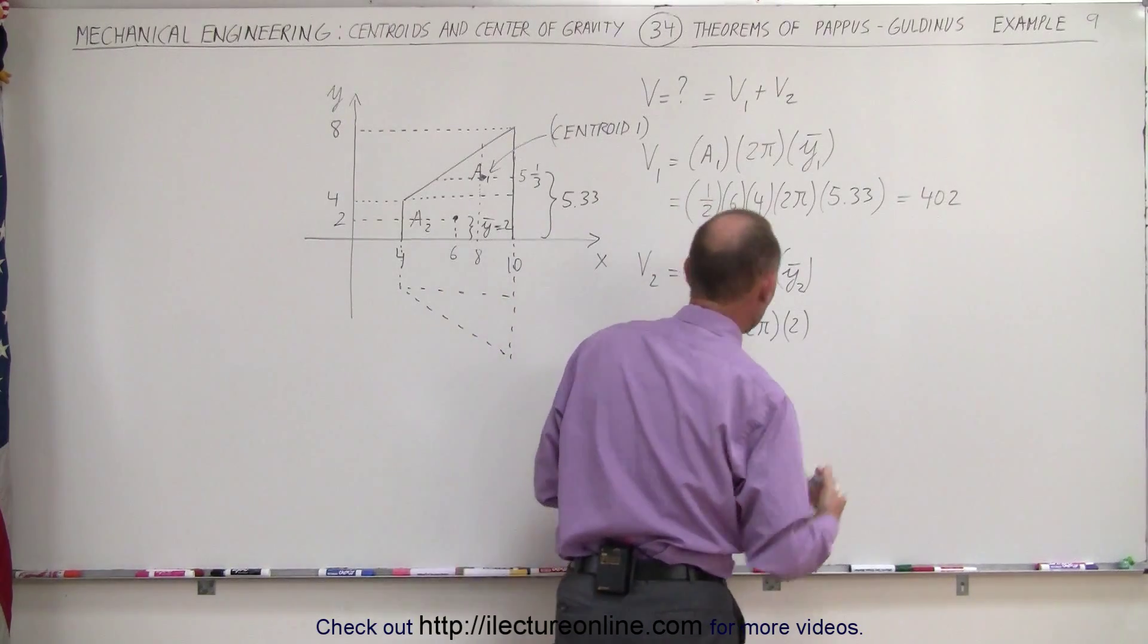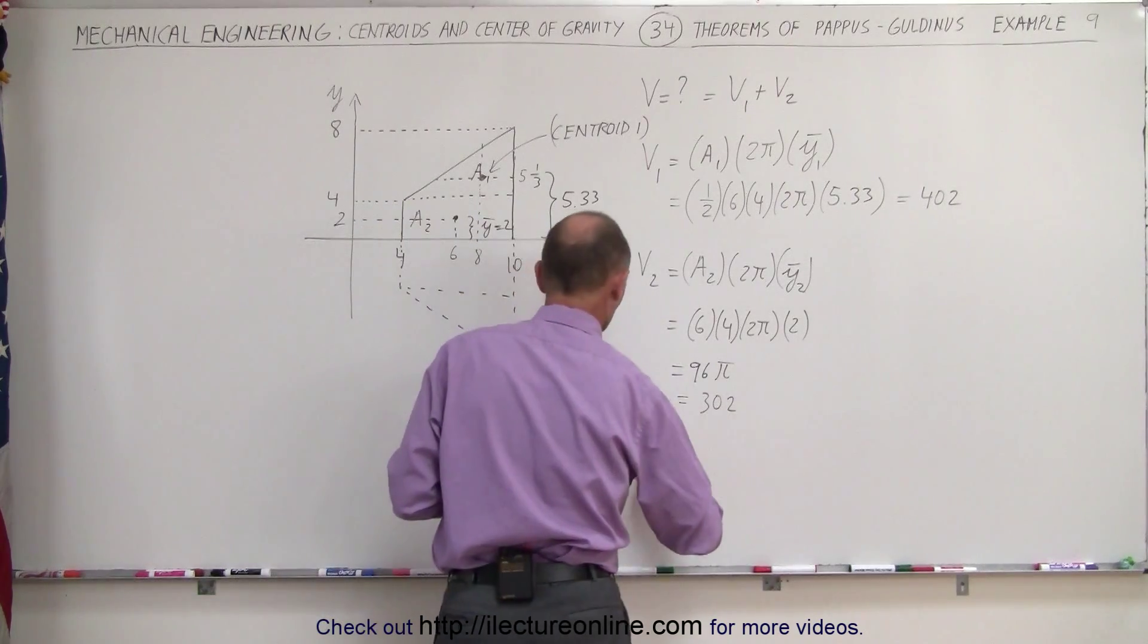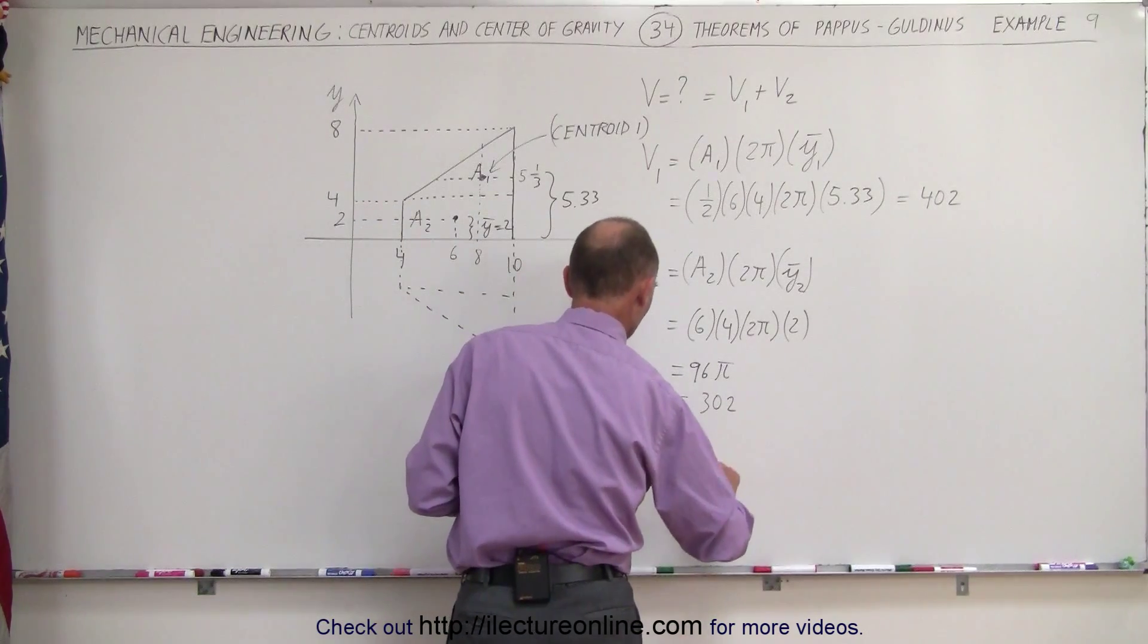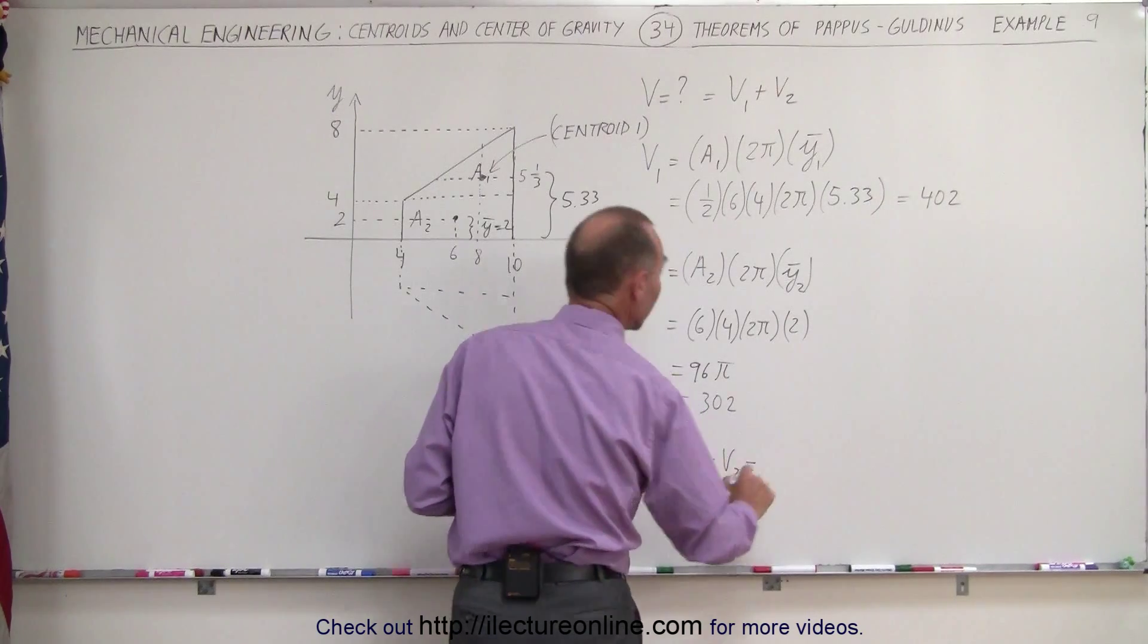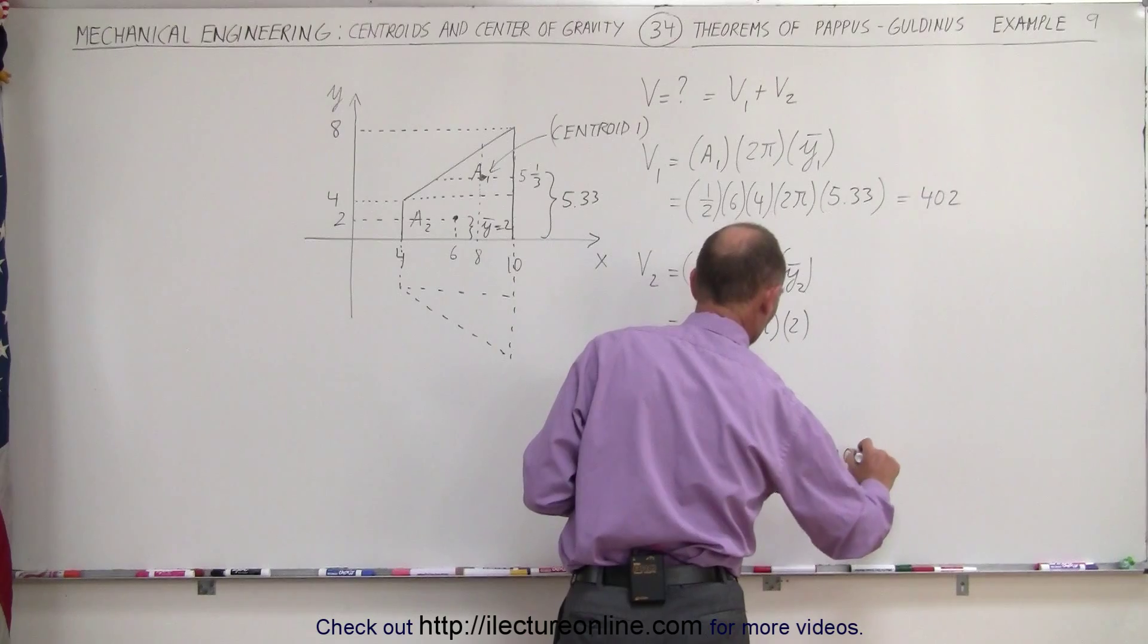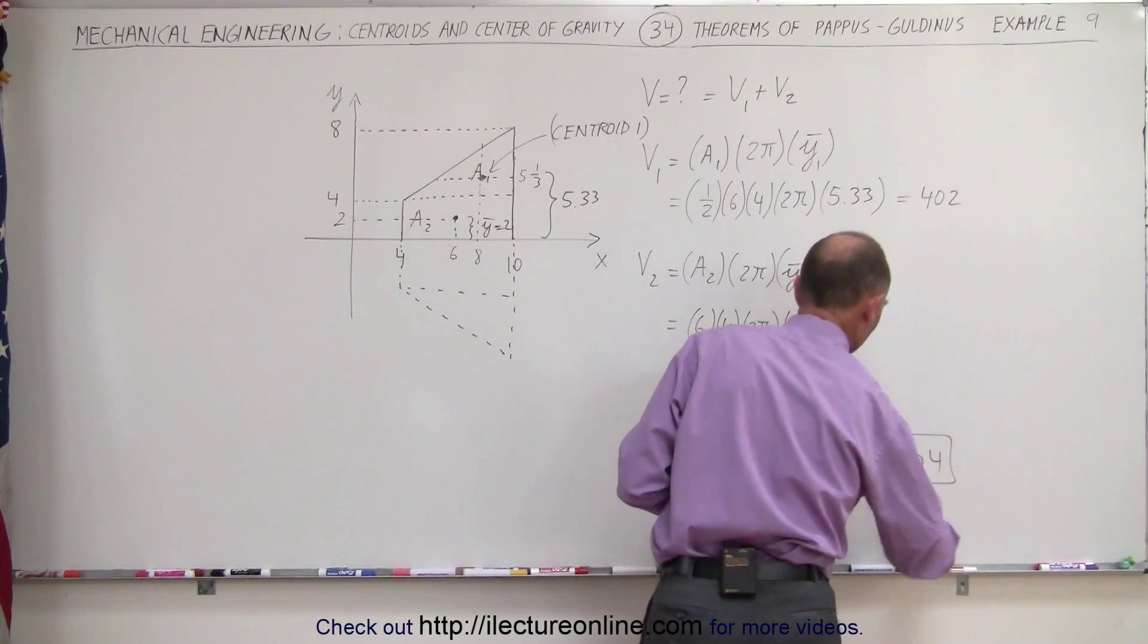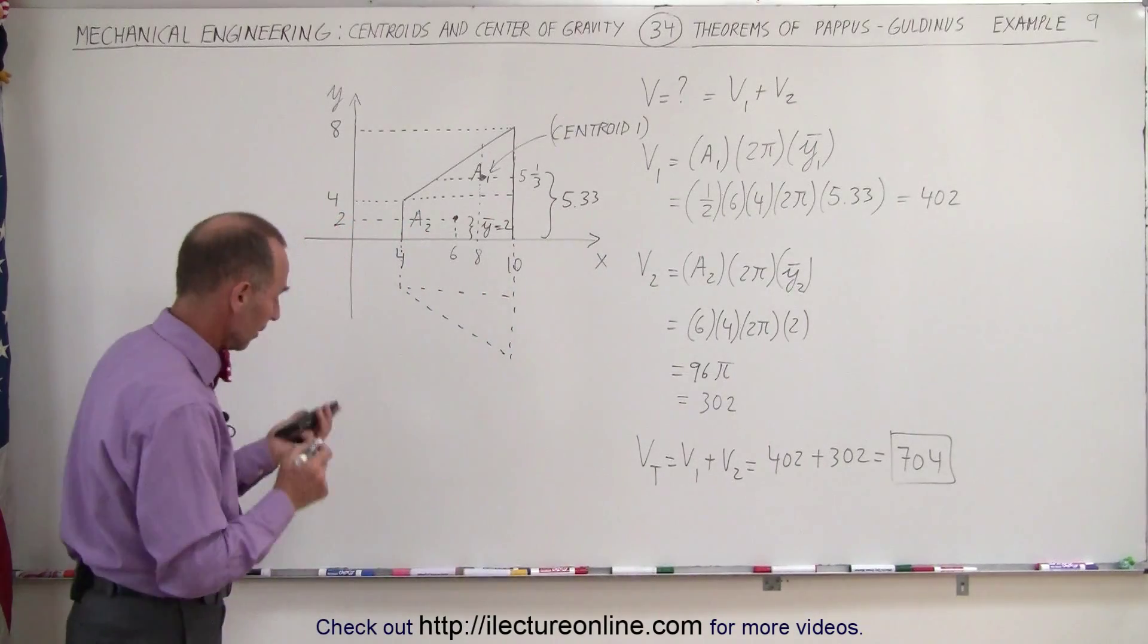Again, that would be cubic centimeters or cubic meters or whatever the units are. Finally, the total volume, which is the sum of V1 plus V2, is equal to 402 plus 302, equals 704, the total volume in whatever units we're using here.